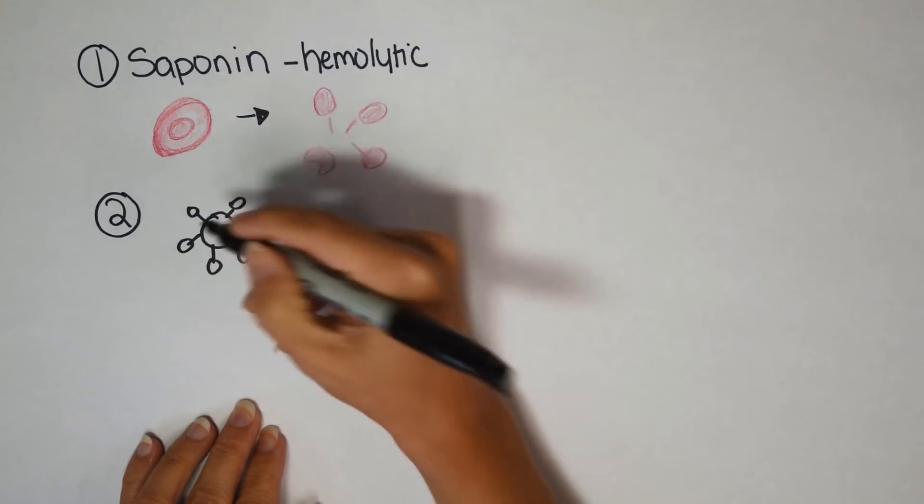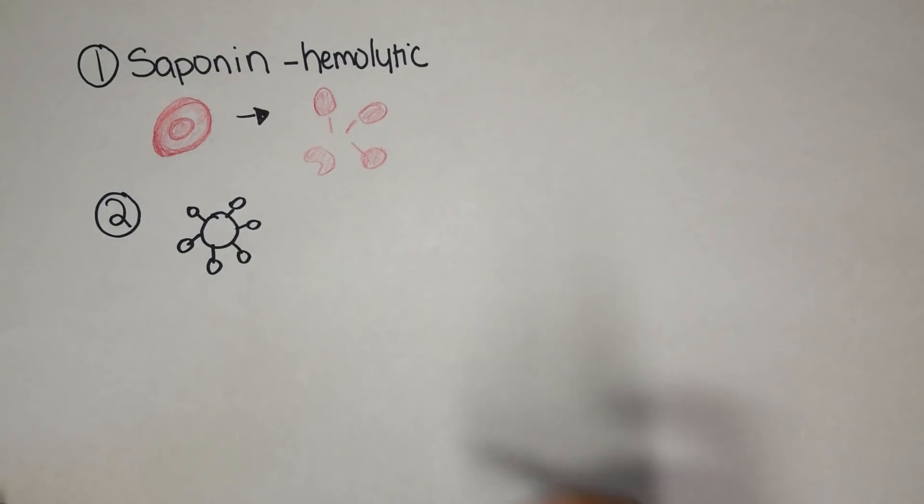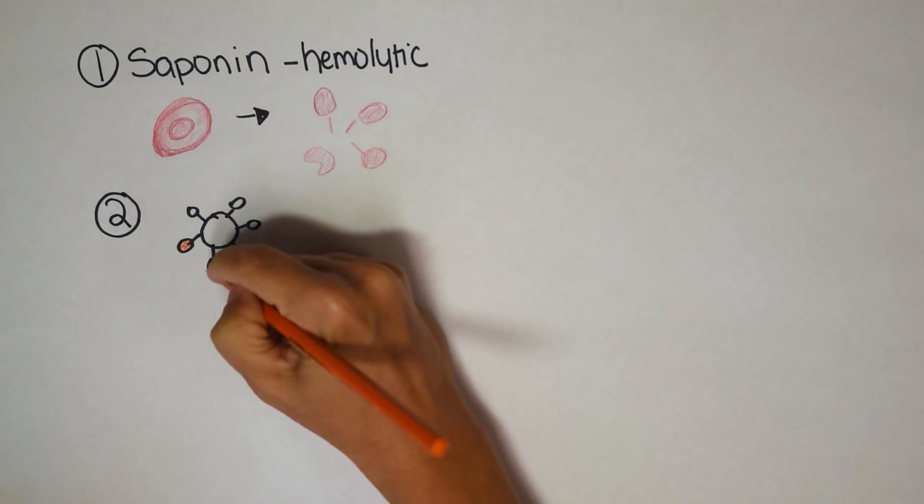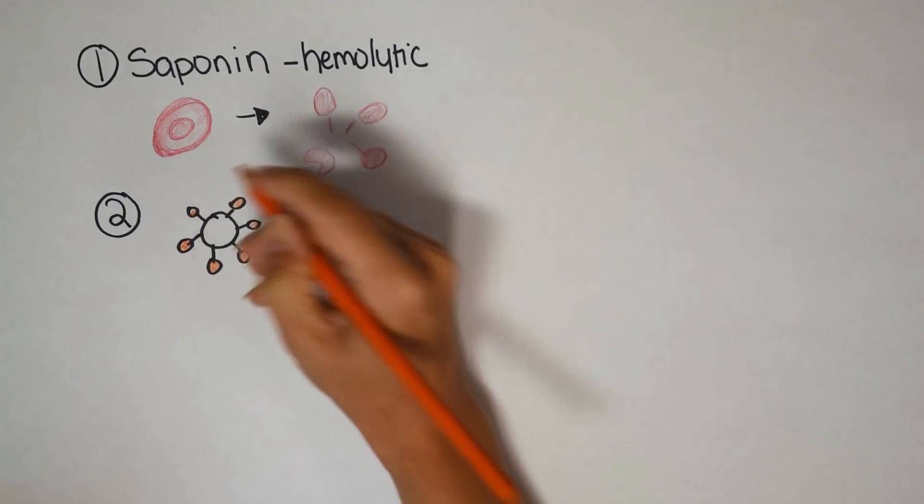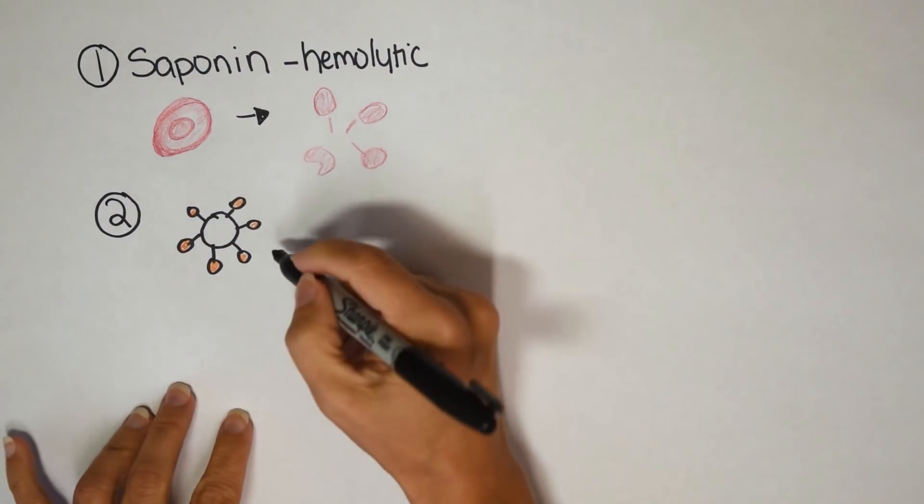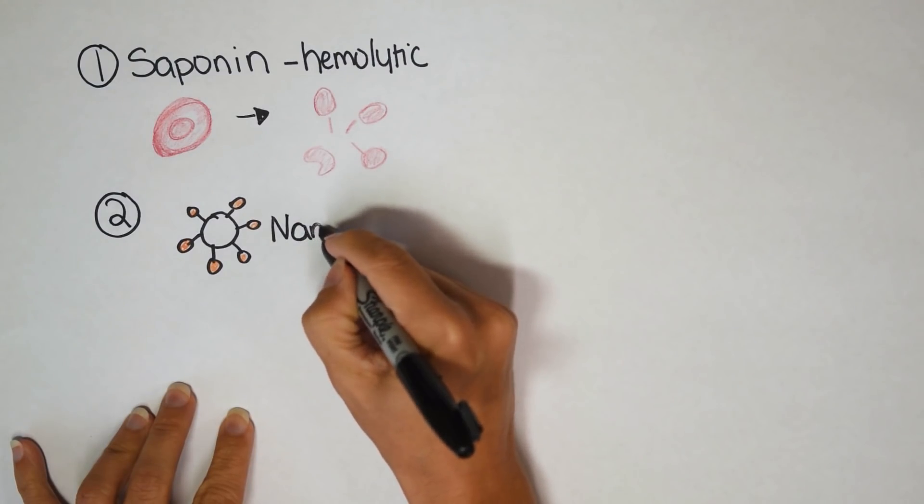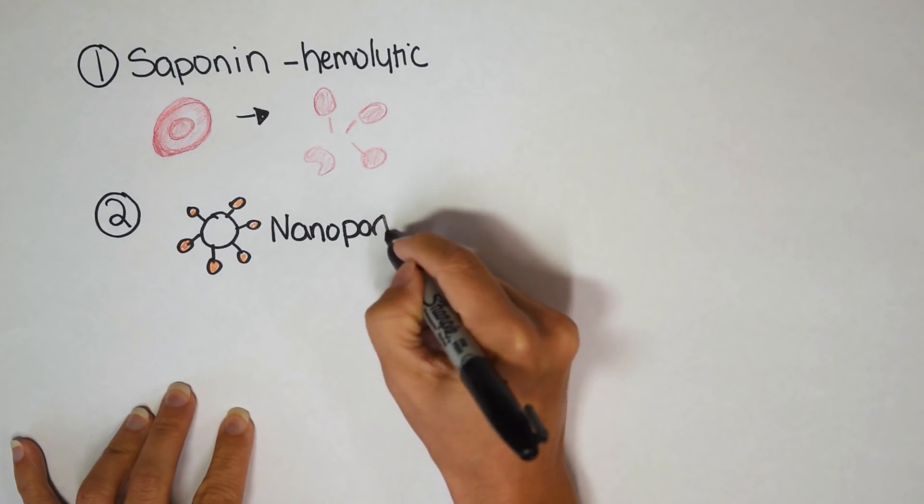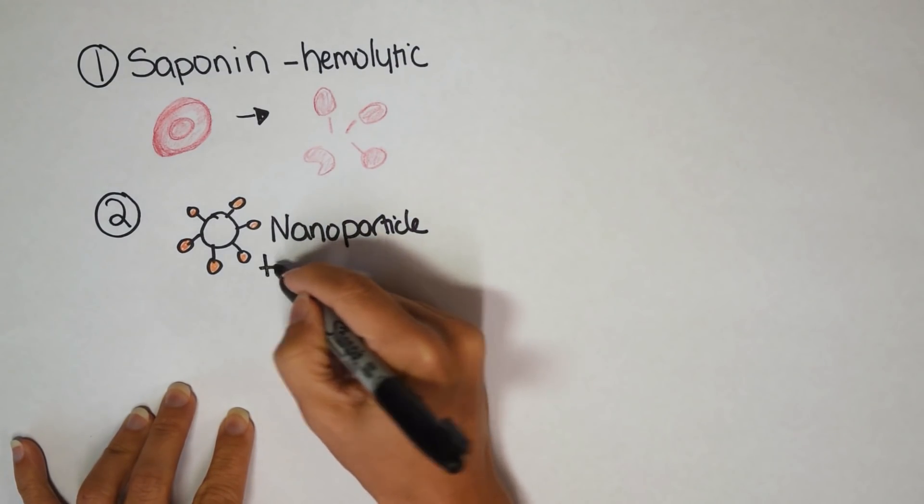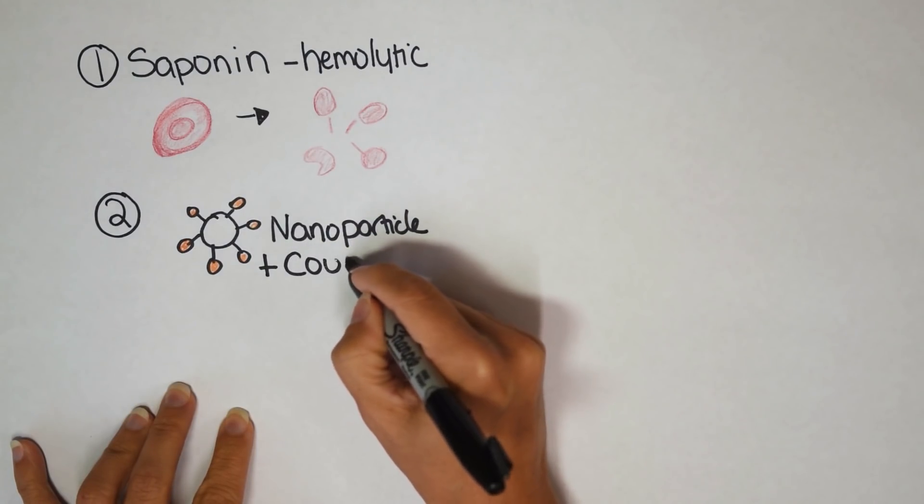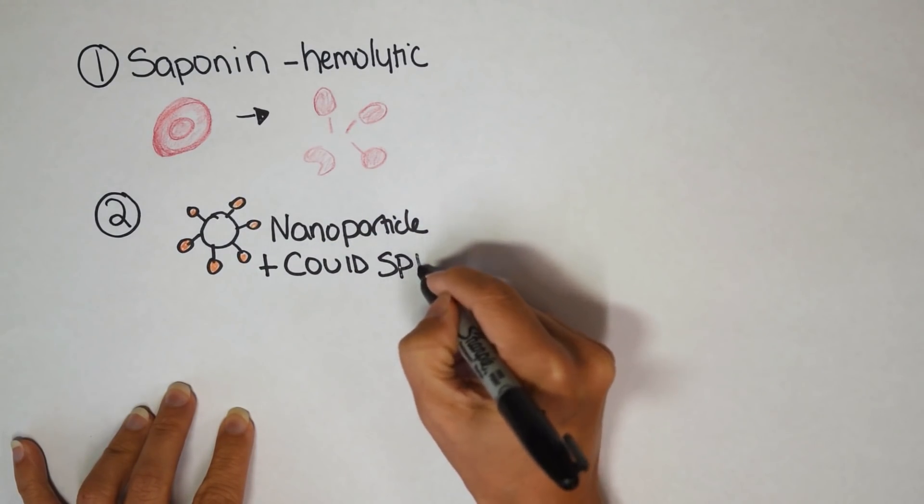So anytime you break down red blood cells, your immune system is pretty interested and they get activated. But remember, it's naturally derived. So here, my second point is that you're going to be receiving, if you take Novavax, you'll be receiving a nanoparticle with attached COVID spike proteins. So that's it. You're basically getting soap and COVID spike protein, nothing else.